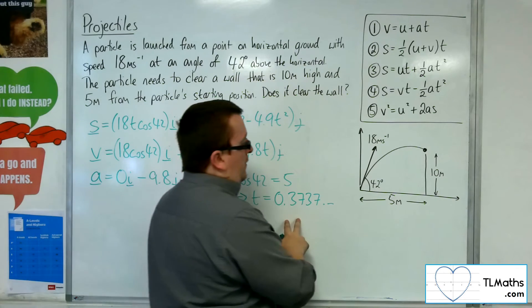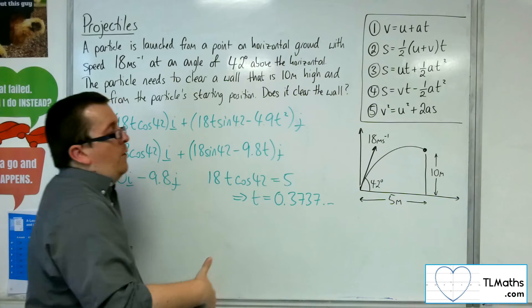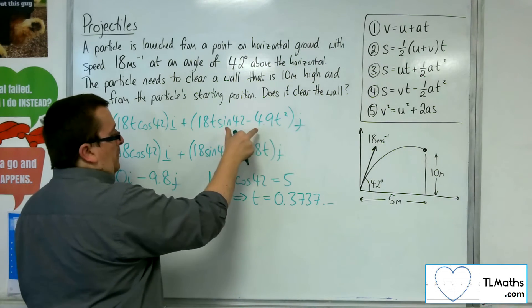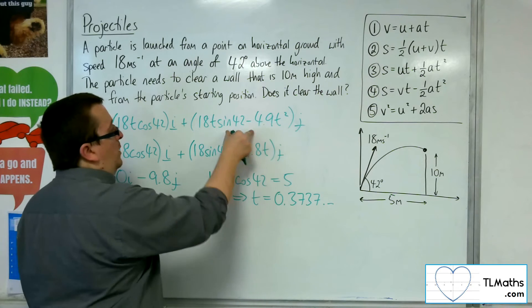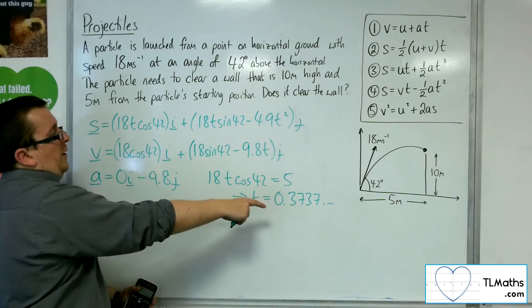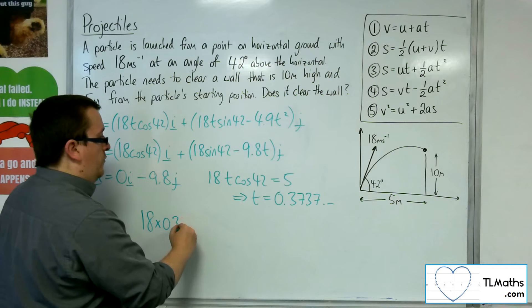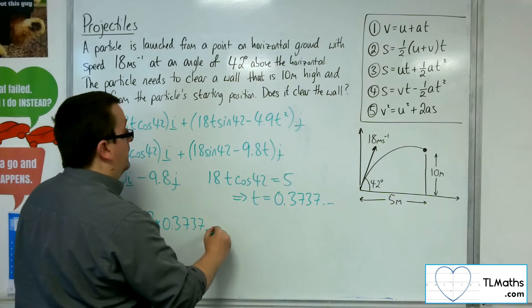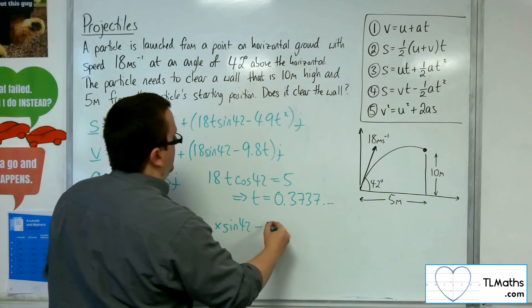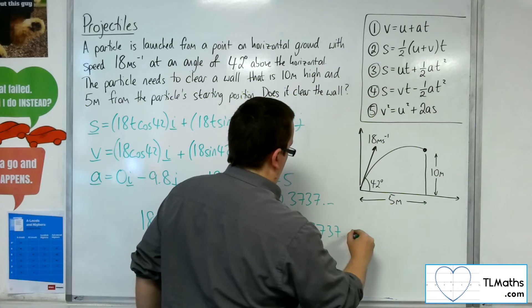So that's the time that the particle takes to reach 5 metres horizontally. Now I can figure out the particle's vertical displacement by substituting that number into the vertical component for the displacement. I can get 18 times t, the 0.3737, times sine of 42, take away 4.9 times 0.3737 squared.